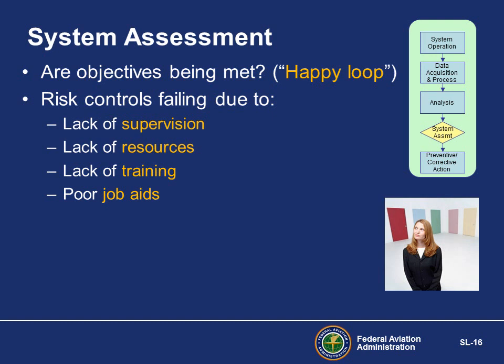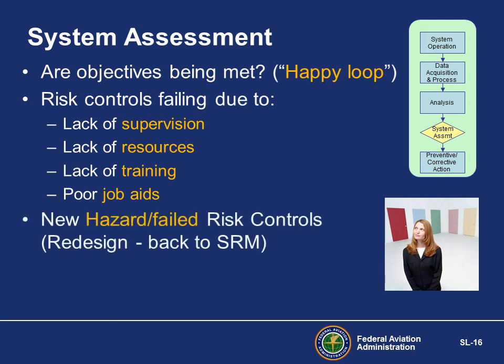In the second option, the controls themselves may be okay or need minor correction, but employees are not following their procedures. The standard requires a structured, documented process for preventative and corrective action to place controls back on track. The third option is where new hazards are discovered or risk controls have failed. Sometimes everyone is doing everything expected, but it just isn't working. Conditions may have changed — changes in contracts, airports, new equipment, or changing demographics — so we've identified a new uncontrolled hazard and need to return to the SRM process to redesign system aspects or develop new controls.